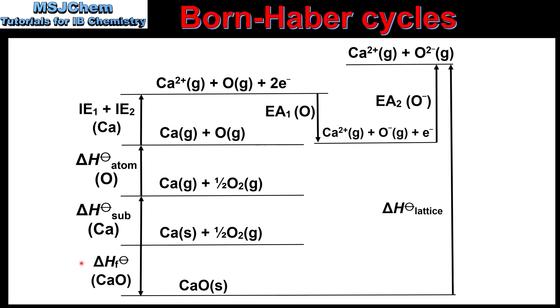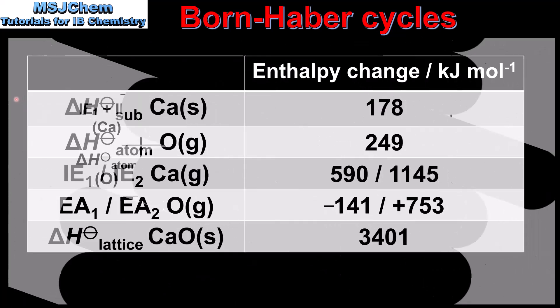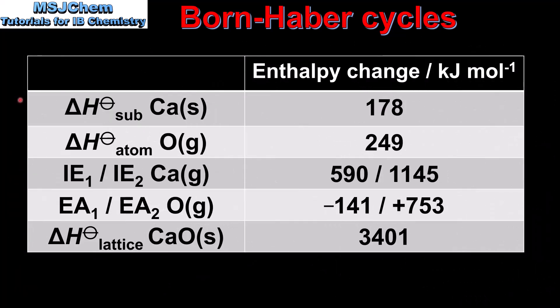In this video we will use the Born-Haber cycle to calculate the enthalpy of formation of calcium oxide. In this table we have the values of the enthalpy changes. Starting with the enthalpy of sublimation of calcium, which is 178 kilojoules per mole. As mentioned previously we could use the enthalpy of atomization of calcium, which has the same value. Next we have the enthalpy of atomization of oxygen, which is 249 kilojoules per mole. We could also use half the bond energy of oxygen, which has the same value. Next we have the first and second ionization energies of calcium.